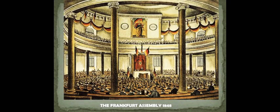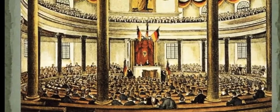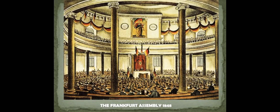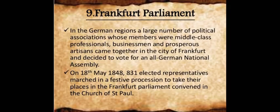Children, if you see this figure of the Frankfurt Parliament, it is in Germany. As you have seen, nationalist feelings were widespread in Europe, so Germany could not be away from revolts and events. In the German regions, a large number of political associations — whose members were middle-class professionals, businessmen, and prosperous artisans — came together in the city of Frankfurt and decided to vote for an All-German National Assembly, meaning they wanted a representative form of government. They voted and won.